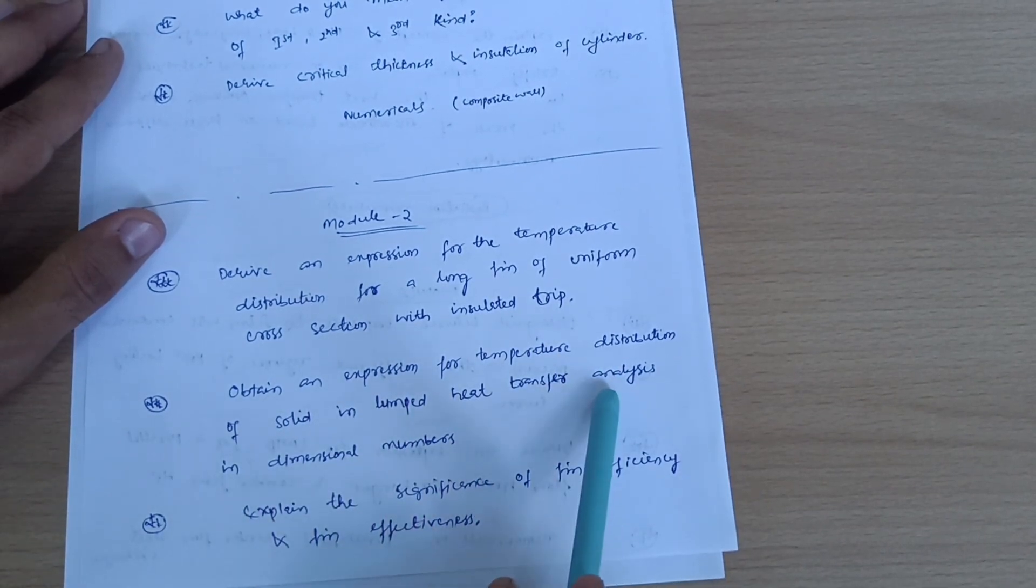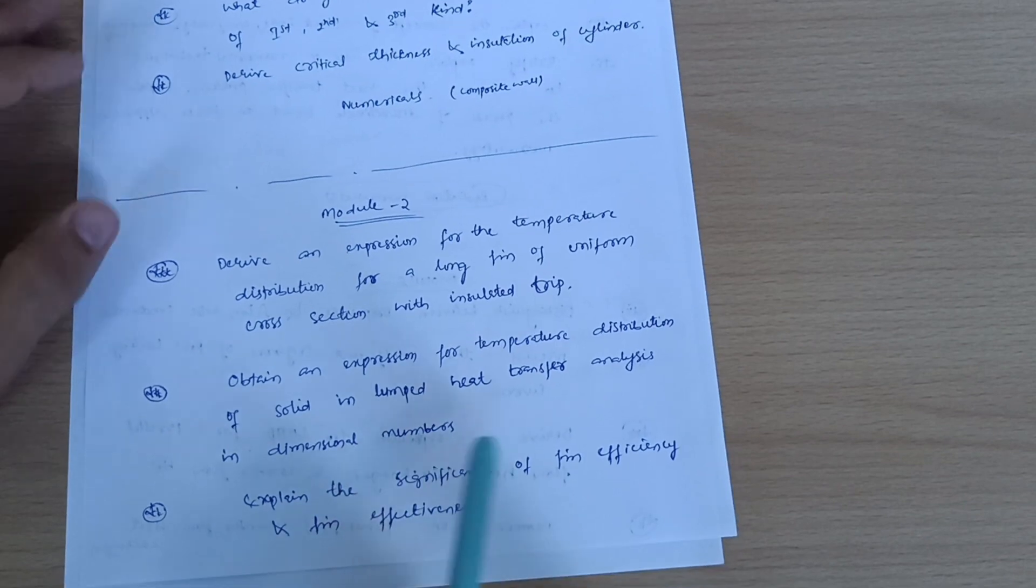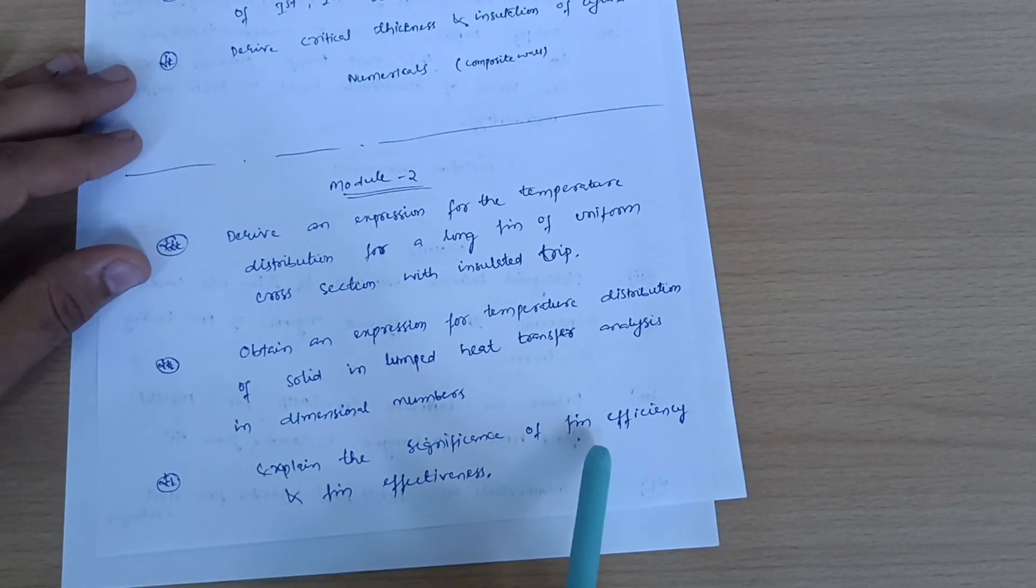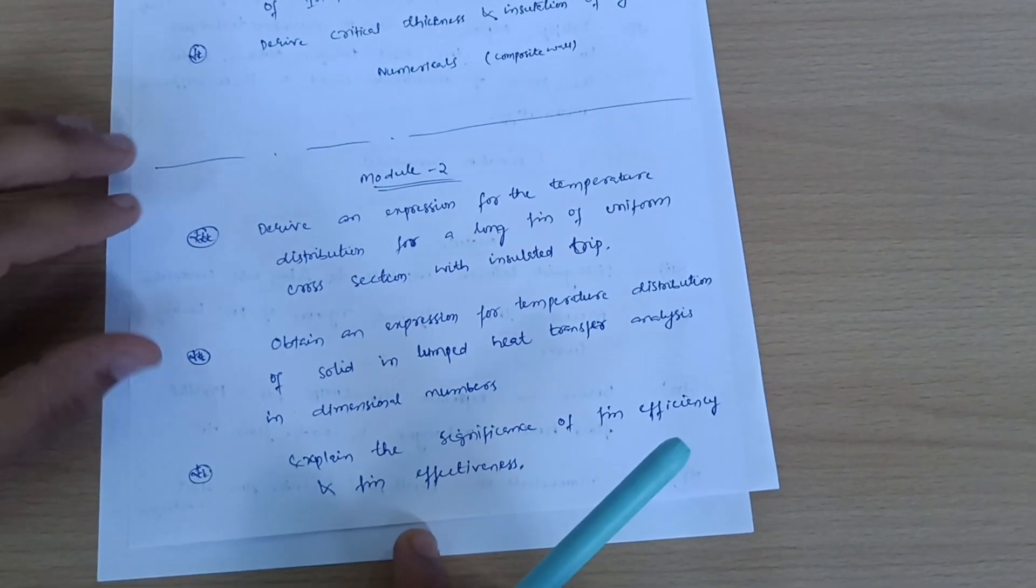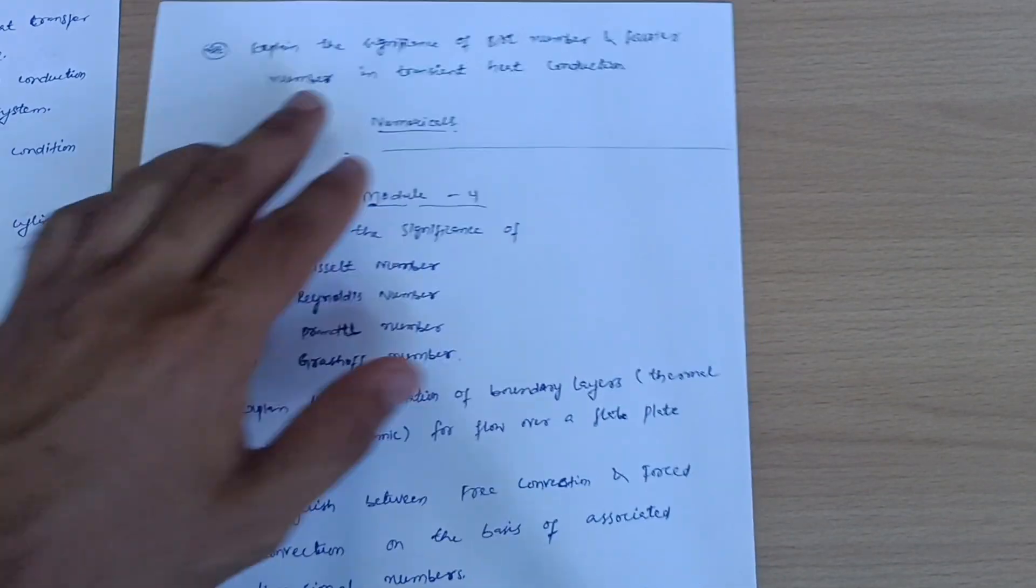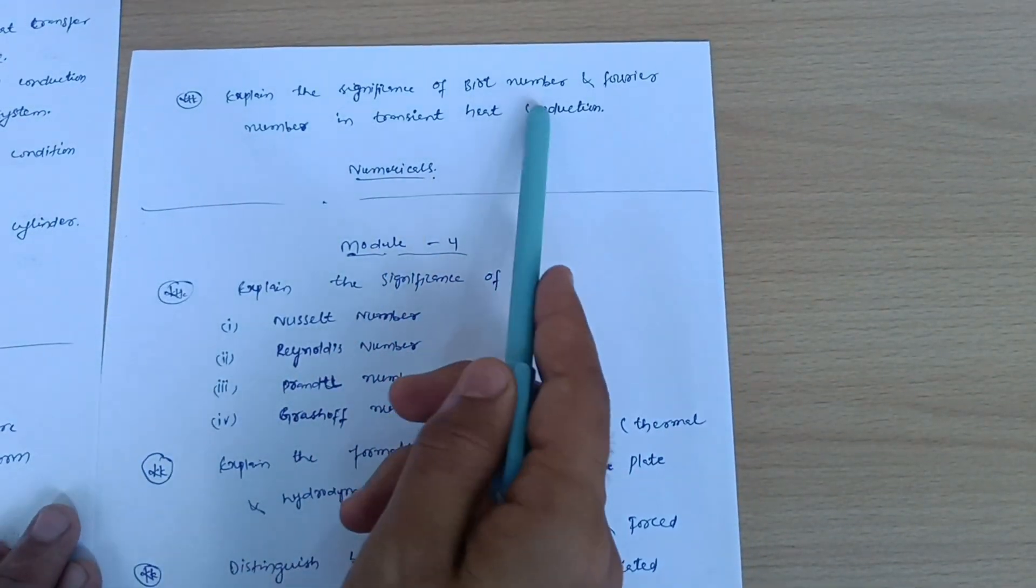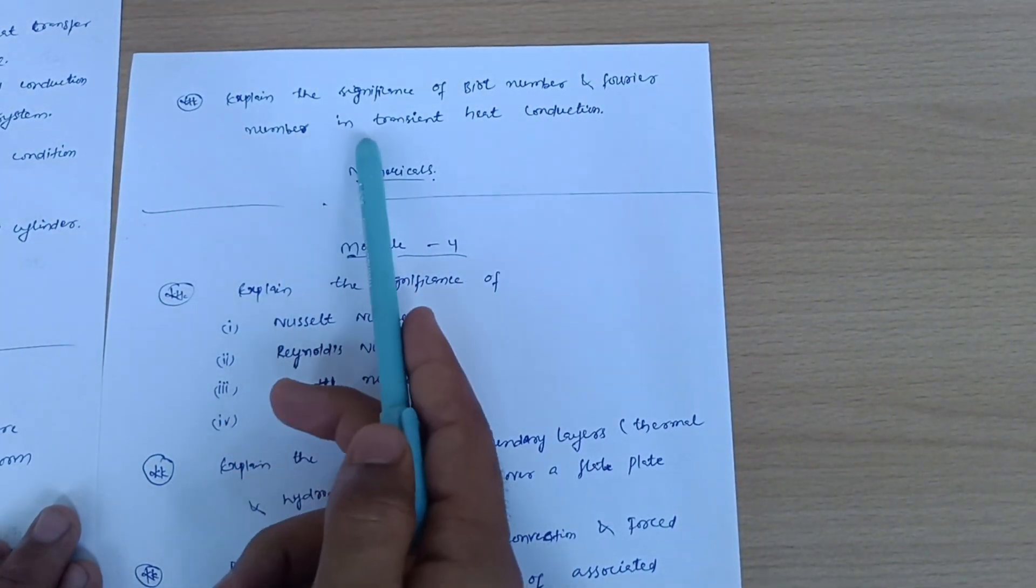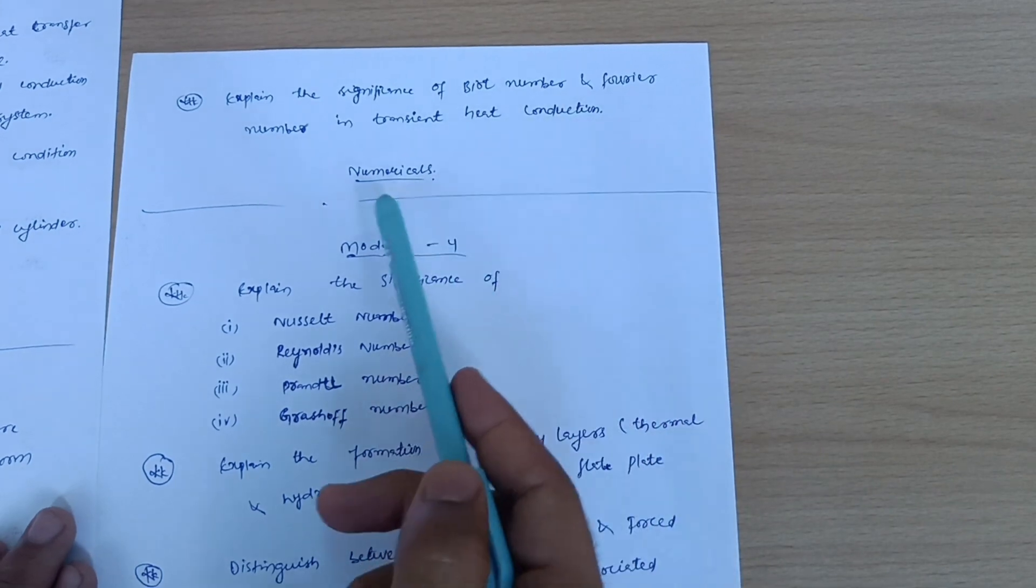Explain the significance of fin efficiency, fin effectiveness. Explain the significance of Biot number and Fourier number in transient heat conduction.